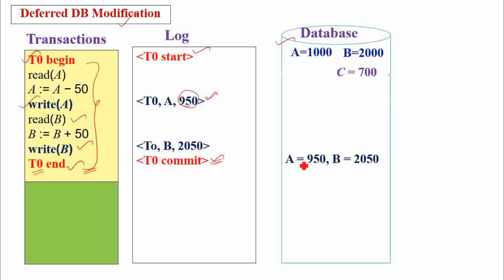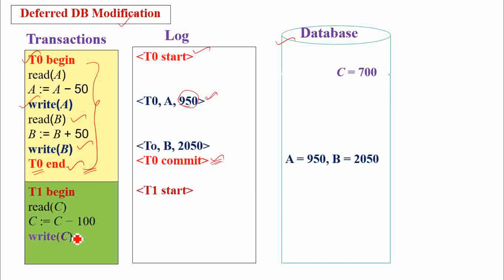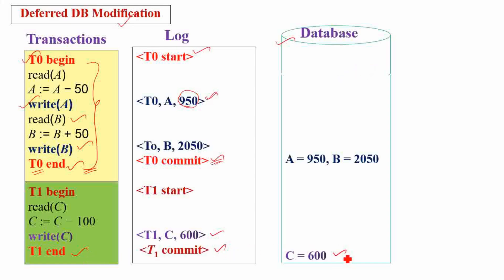T1 then starts its execution; the corresponding start log is made. When the write operation is performed, the update record is also made. When end is performed, the commit record is made, and the corresponding update is made into the database after the commit only. Since database updates are deferred until the commit of the transactions, it is known as deferred database modification technique.